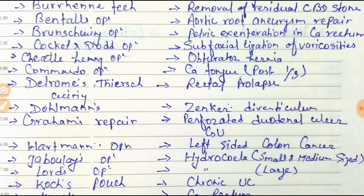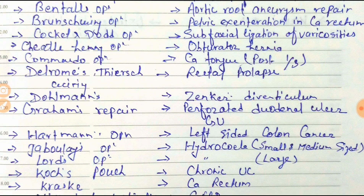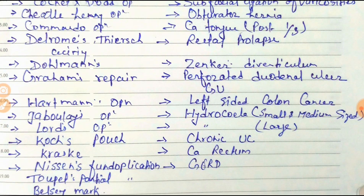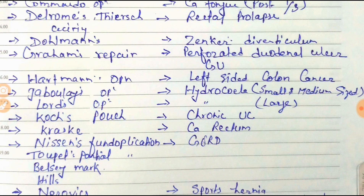For perforated duodenal ulcer or gastric ulcer, remember G for gastric — Graham's repair is used. For left-sided colon cancer, Hartmann's operation is used. For hydrocele: if it is small or medium size, Jaboulay's operation is used; for a large hydrocele, Lord's operation is used.